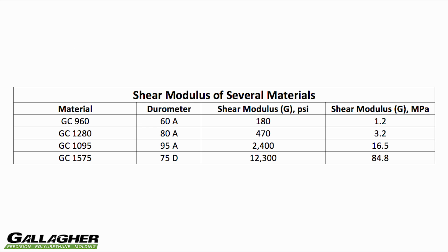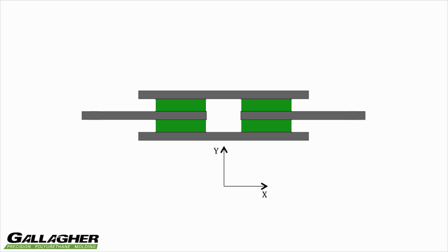This table shows the shear modulus of several Gallagher Corporation urethanes, ranging in hardness from 60 Shore A to 75 Shore D. In general, polyurethanes produce a much lower spring rate in shear than in compression. Thus, the modulus is much lower when force is applied in the X direction than when force is applied in the Y direction.